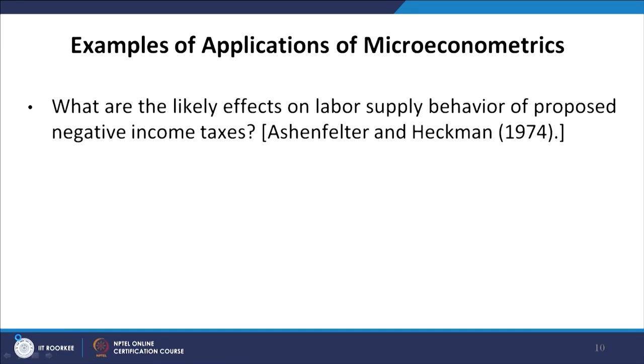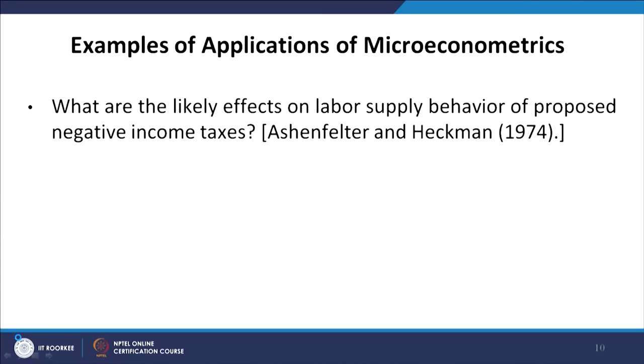Here I have quoted some well-known or popular studies. Interested students can get back to the original studies and understand what problems are handled there and what methodologies are used. For example, one study by Ashton, Felter, and Heckman in 1974 tried to understand the likely effects on labour supply behaviour of proposed negative income taxes — that is, when income taxes are imposed, how labourers are going to react by changing their labour supply or availability in the labour market.